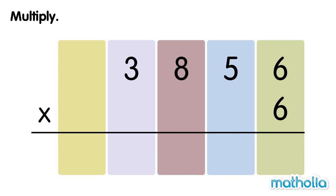Let's find 3,856 times 6. Start by multiplying the 1s. 6 times 6 ones equals 36 ones. Regroup 36 ones into 3 tens and 6 ones.